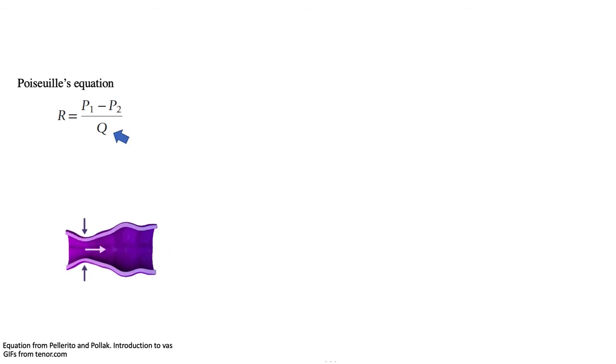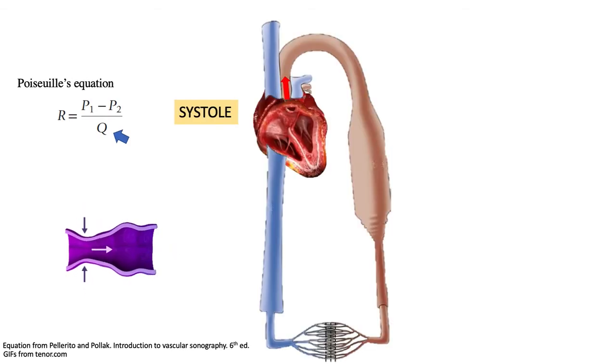Same thing with the ventricle. Now let's look here at the left side of the heart. When the ventricle contracts, it ejects the blood into the systemic circulation.